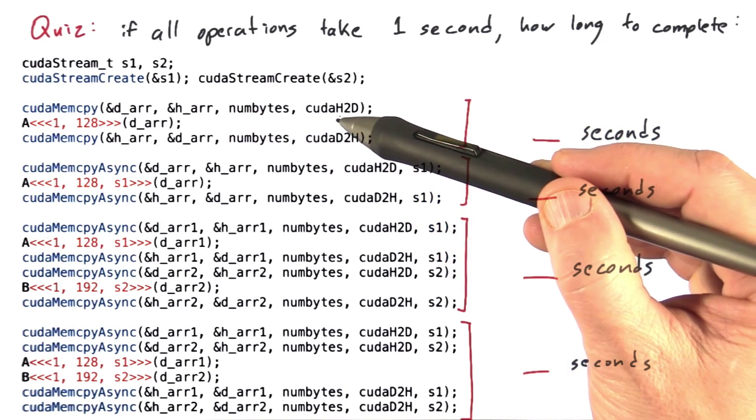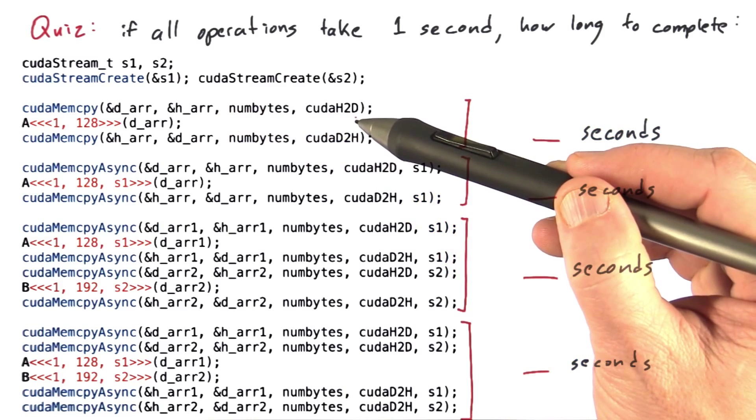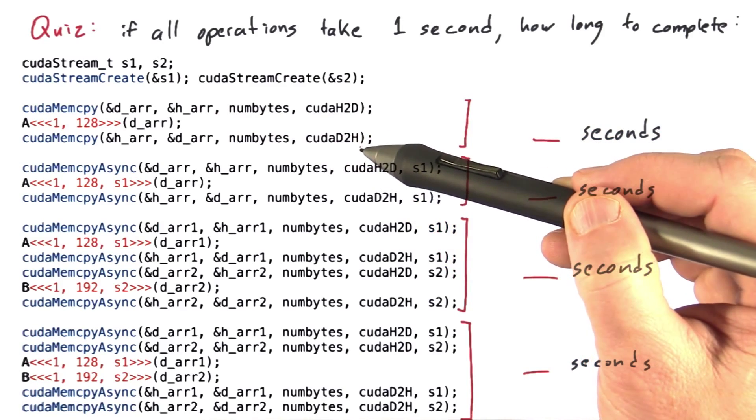For shorthand, I just abbreviated CUDA host to device as h to d, and CUDA device to host as d to h.